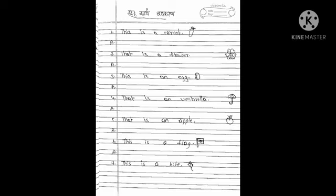Now see the third one: 'This is an egg.' This means — you know that? If you didn't understand, check the previous video, yesterday's video. This is an egg. Egg ko Hindi mein kya kahate hai? Anda. So you write this sentence on your own.